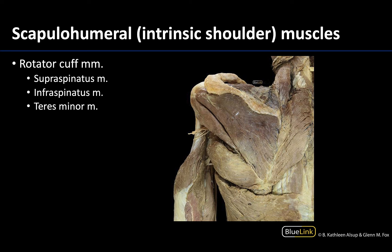This view shows the posterior region with the deltoid muscle removed so you can really see these posterior rotator cuff muscles and where their distal attachments are. Here is the scapular spine and here is the acromion. The supraspinatus is in the supraspinous fossa and it goes under the acromion to attach on the greater tubercle. The infraspinatus is this larger muscle, and the teres minor, and all three have their distal attachments on the greater tubercle. It can be very difficult to tell the difference between the infraspinatus and the teres minor.